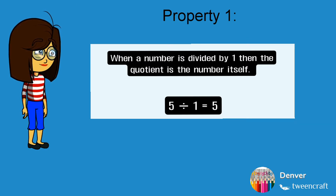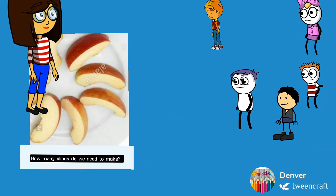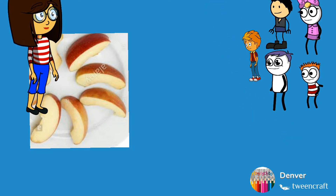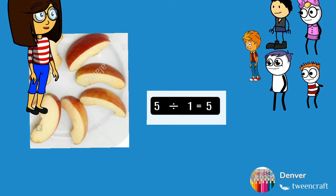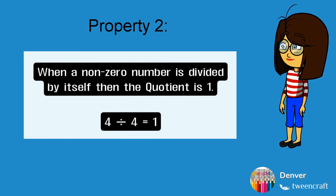Now let us see how this works. There are five kids but only one apple. How many slices do we need to make? Since there are five kids and one apple, we need to make five slices so that each one of the kids gets one slice of the apple. Therefore, five divided by one equals five. This concludes that when a number is divided by one, the quotient is the number itself.